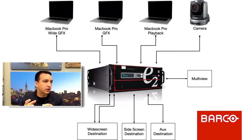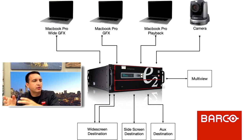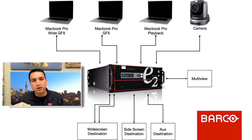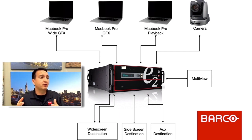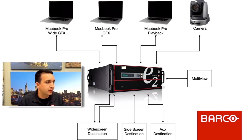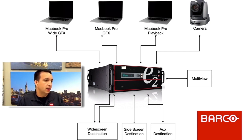Here's the set, here's the gag. We've got a widescreen destination, a sidescreen, and an auxiliary destination that we're going to set up. The widescreen is a large canvas of 3840 by 1080. It utilizes two 1920 by 1080 outputs, overlapped 600 pixels to create an effective canvas of 3240 by 1080. We'll use one of our MacBook Pros as the wide background set to 3840 by 1080, a couple more as sources, and a camera.